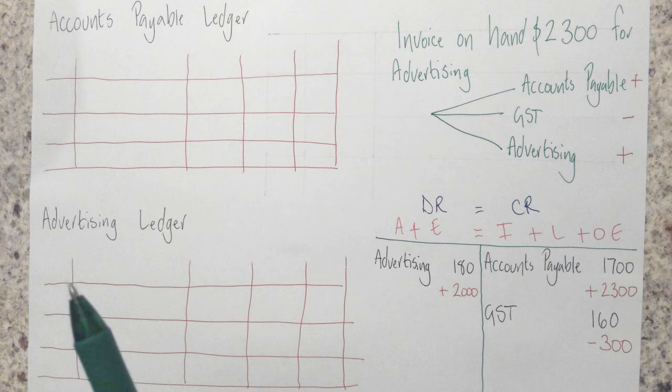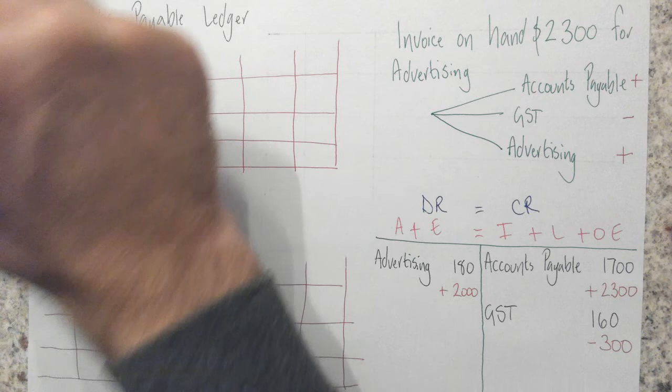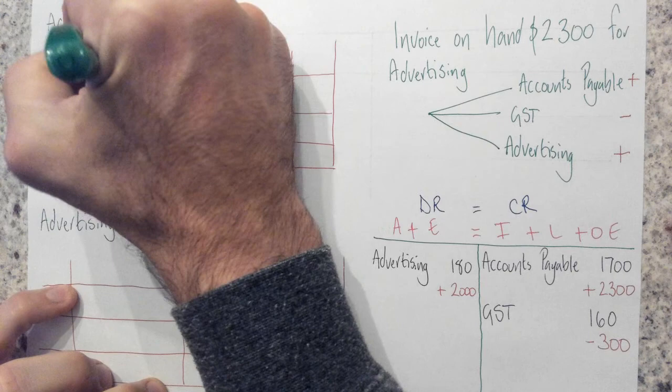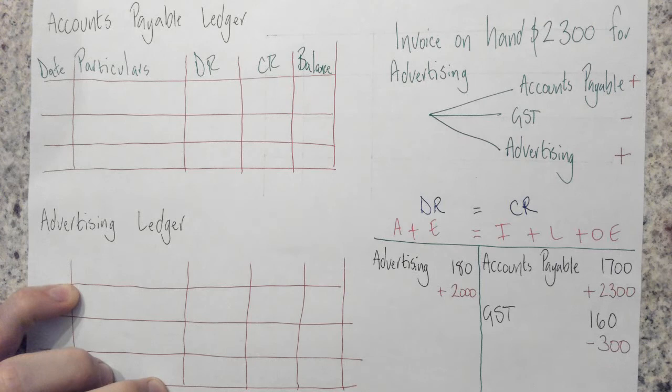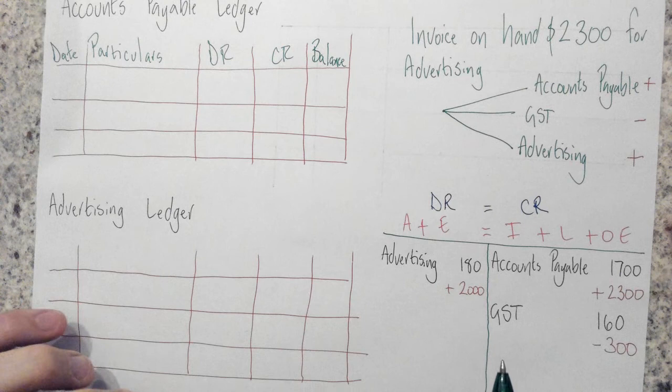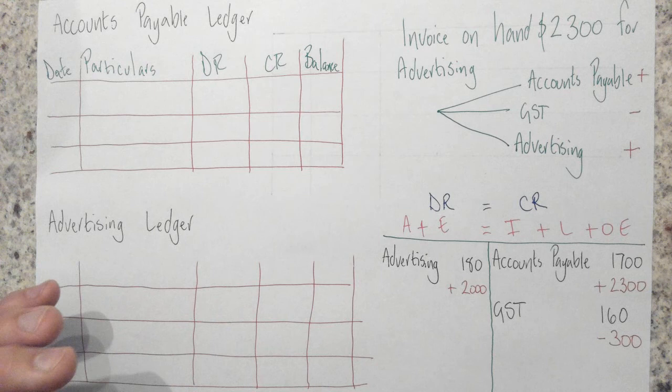I'm going to pop this into the ledger. We'll start off with accounts payable — it doesn't matter which one you start with. The first thing I need to do is pop the titles in: date, particulars, debit, credit, and then the balance. Now remember, a ledger is a storybook — it's a storybook from birth to death of that particular item.